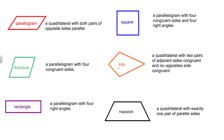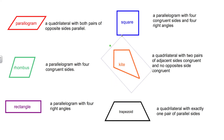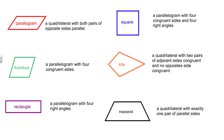Here in the orange we have a kite. If you rotate this shape, it would look like a kite that you might fly in the sky. By definition, a kite is a quadrilateral with two pairs of adjacent sides congruent and no opposite sides congruent. The sides on the left of the kite are congruent and the sides on the right hand side of the kite are congruent. They are adjacent sides because they form an angle — that's by definition adjacent sides.